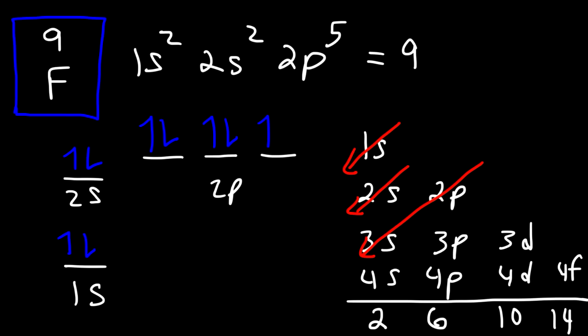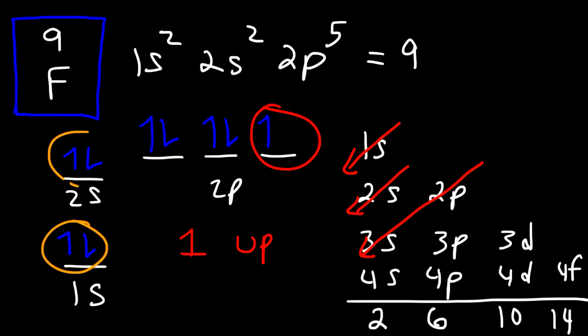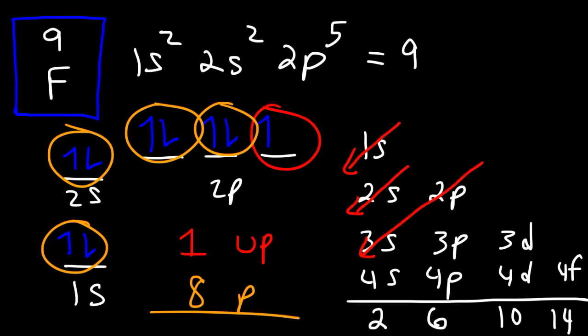This gives us a total of 9 electrons. Based on the orbital diagram, fluorine has 1 unpaired electron and 8 paired electrons, which adds up to 9. That's how you determine the number of paired and unpaired electrons in a particular element.